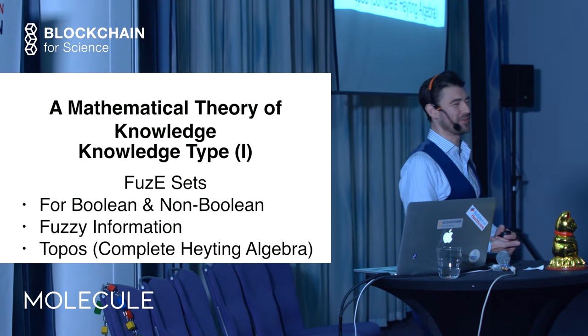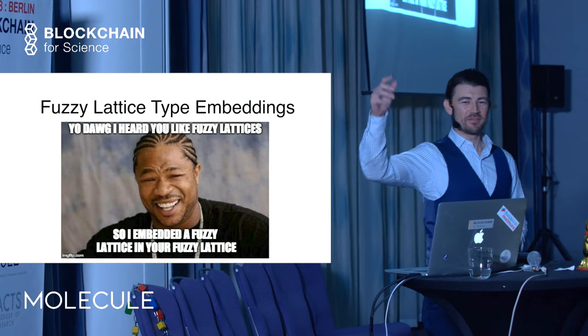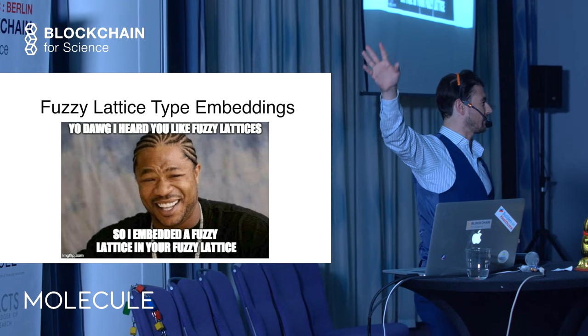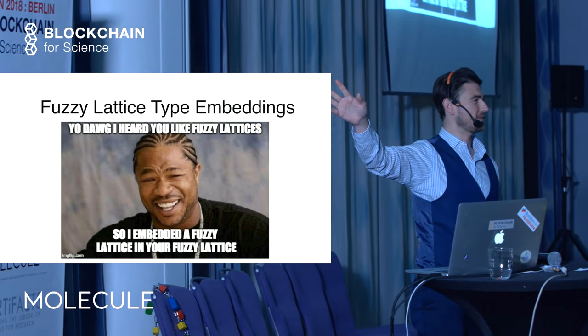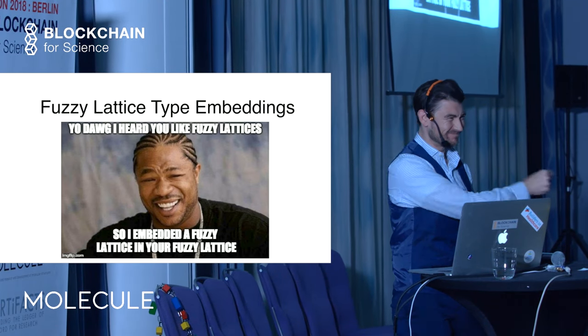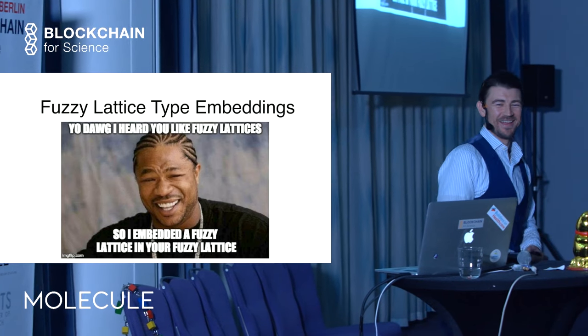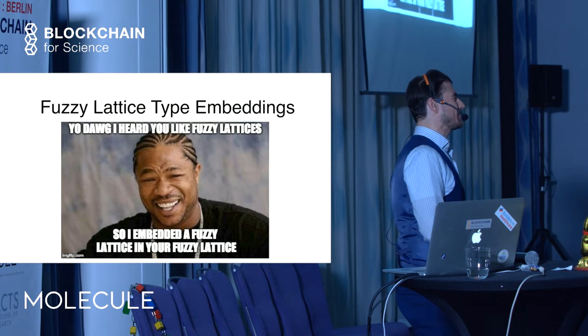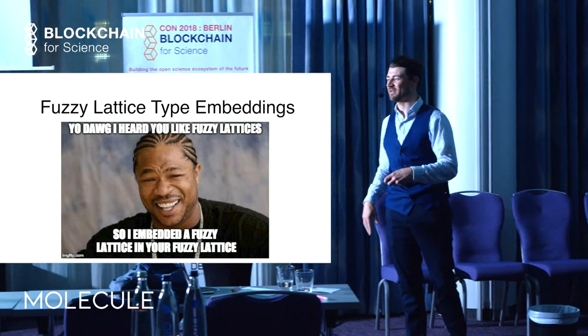With these FuzE sets, you can do Boolean, non-Boolean. You can do fuzzy information. They form a topos, which is really great. So it's a complete Heyting algebra. That's great for some reasons which I'm not going to explain. So that's really cool. That's one of the foundations of these types of knowledge. I hope you're still with me on this. The cool thing, though, is with fuzzy lattice type embeddings. I put a meme in here because they said that would be funny. Is it? No? Okay.